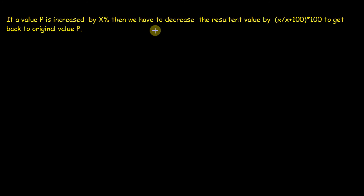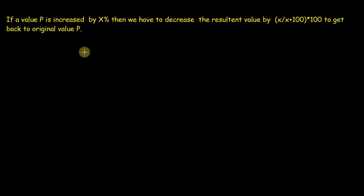Let's move to the advanced concept. If a value P is increased by X percent, then we have to decrease the resultant value by X divided by (X plus 100), multiplied by 100 percent, to get back to the original value P. Let me tell you how this is calculated. When a value P is increased by some percent — in this case X percent — then the final value can be written as P multiplied by (1 plus X/100).